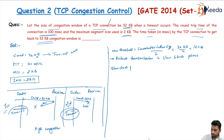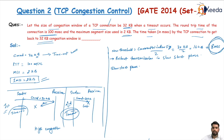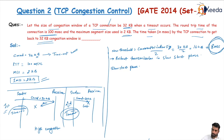Since 1 MSS equals 2 KB, the threshold of 16 KB equals 8 MSS. So the threshold is equal to 8 MSS. Now the slow start phase begins.